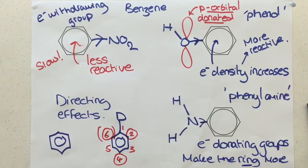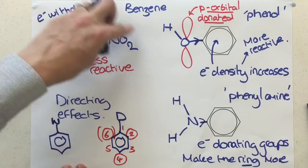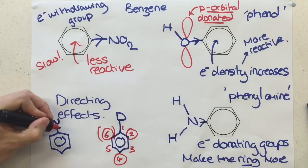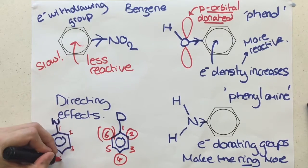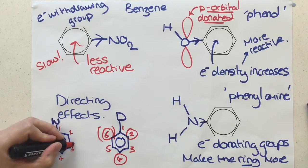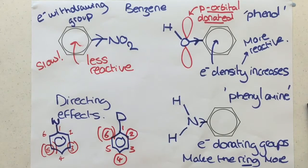In contrast, if we have an electron withdrawing group, like the NO2, then if we number up all the way around once again, so one, two, three, four, five, six, where the groups get pushed in the substitutions when the withdrawing group is bonded to the benzene ring is to positions three and, of course, the mirror of that, which would be five.